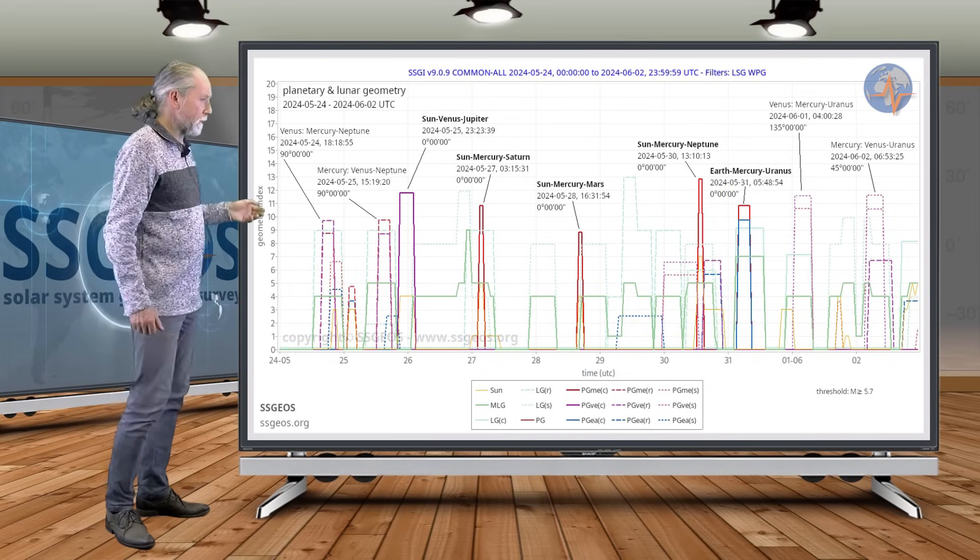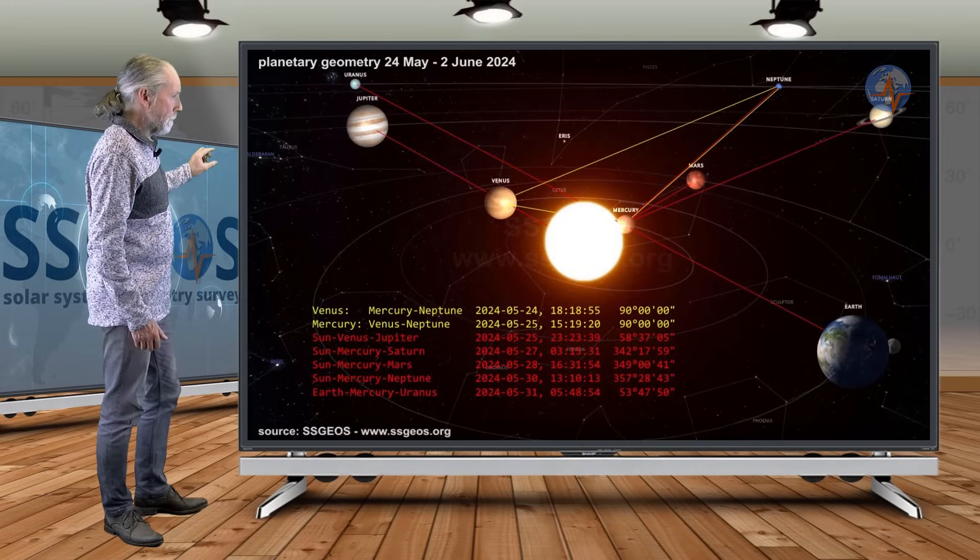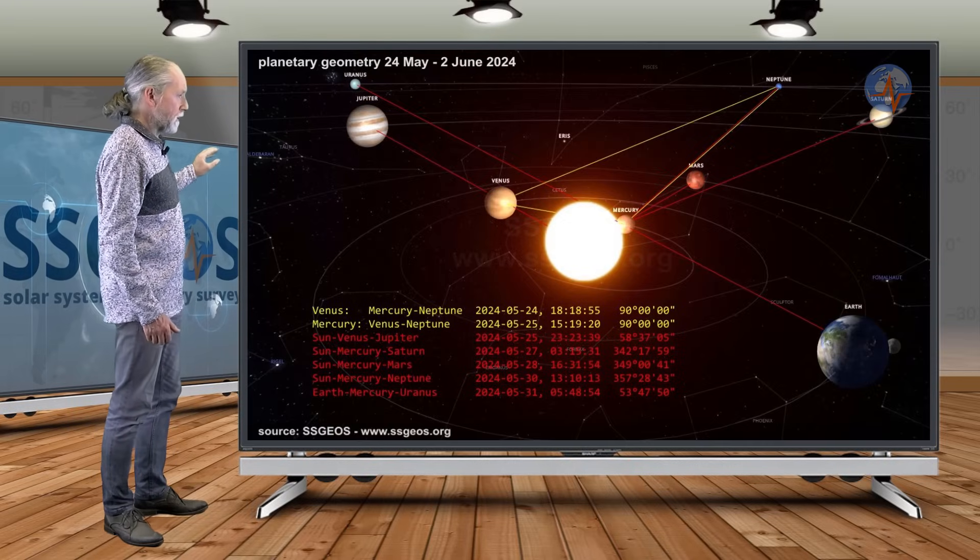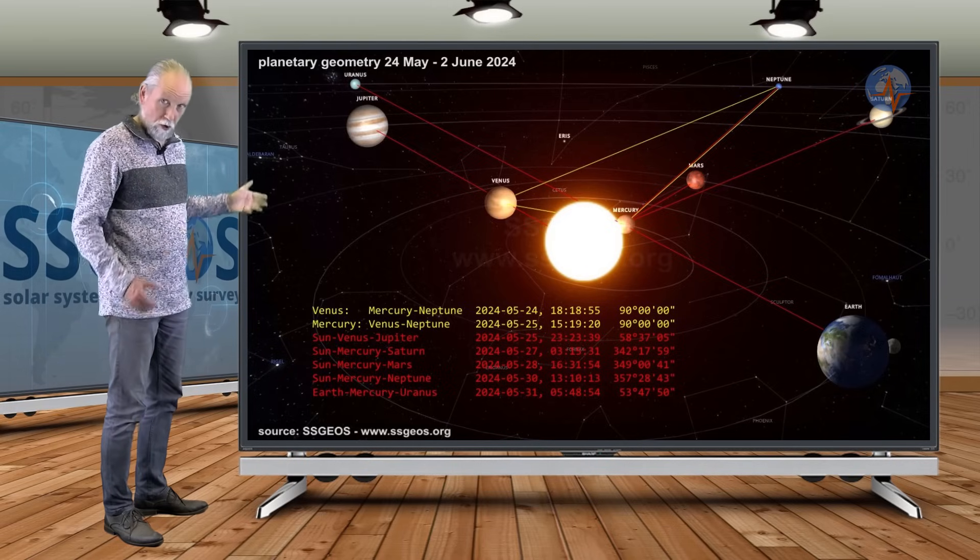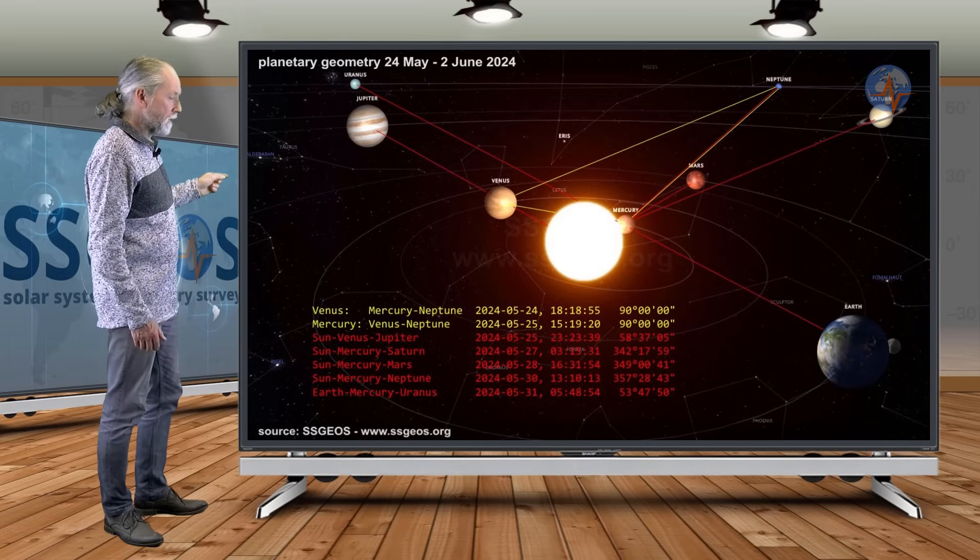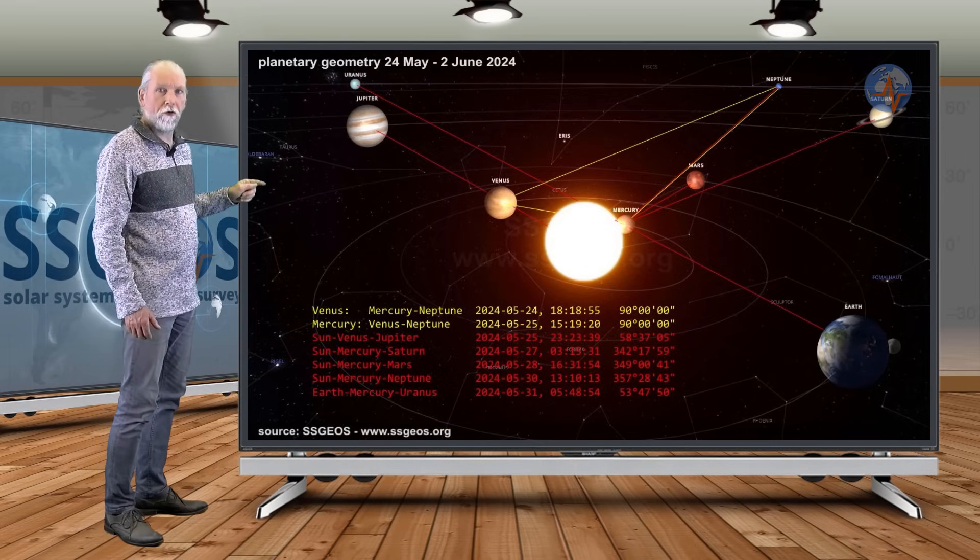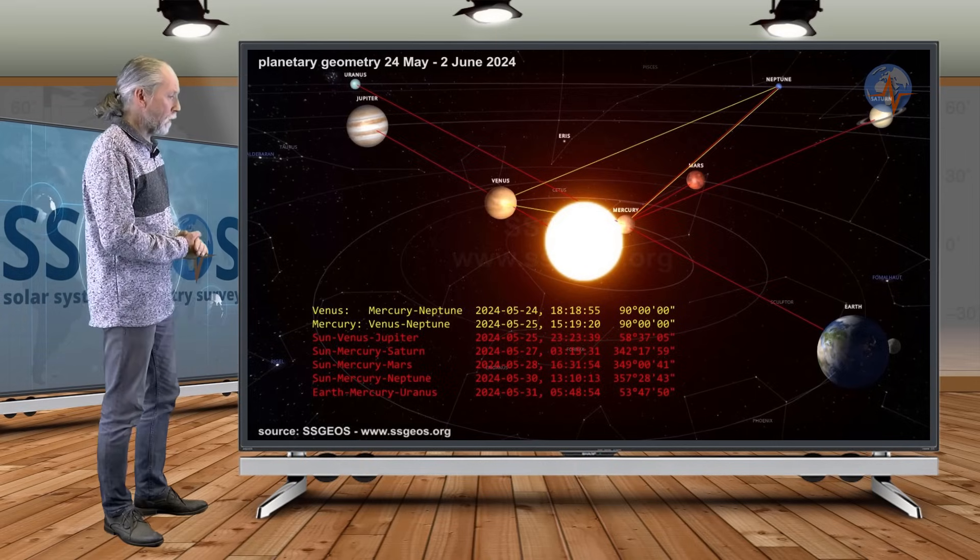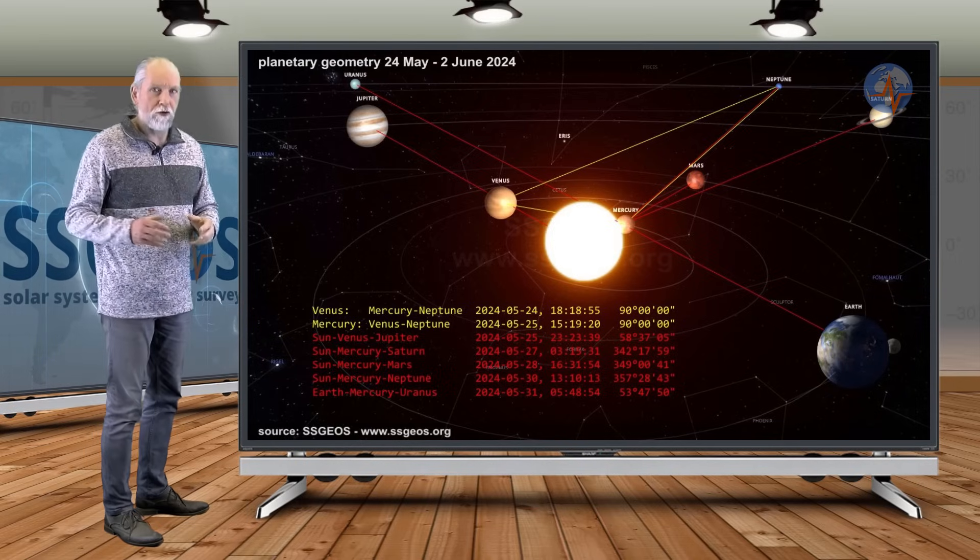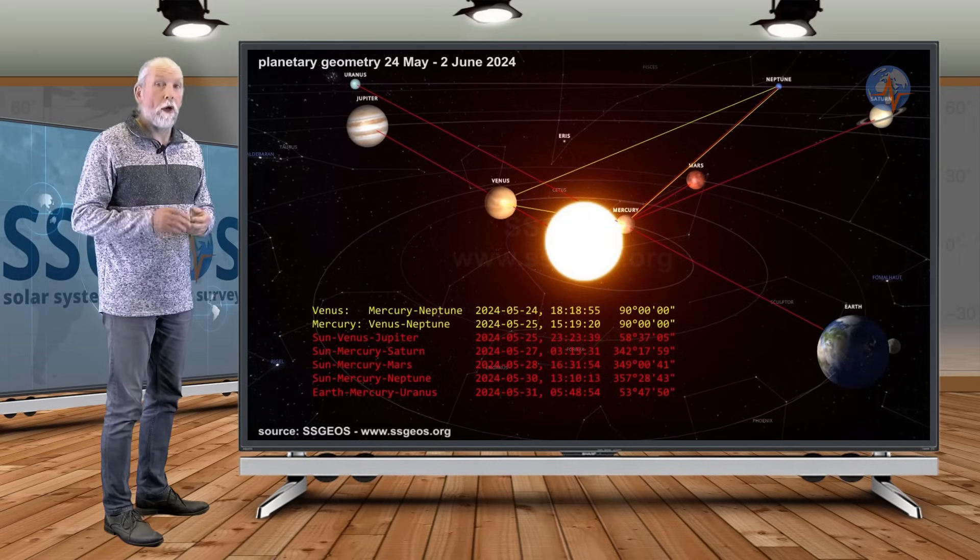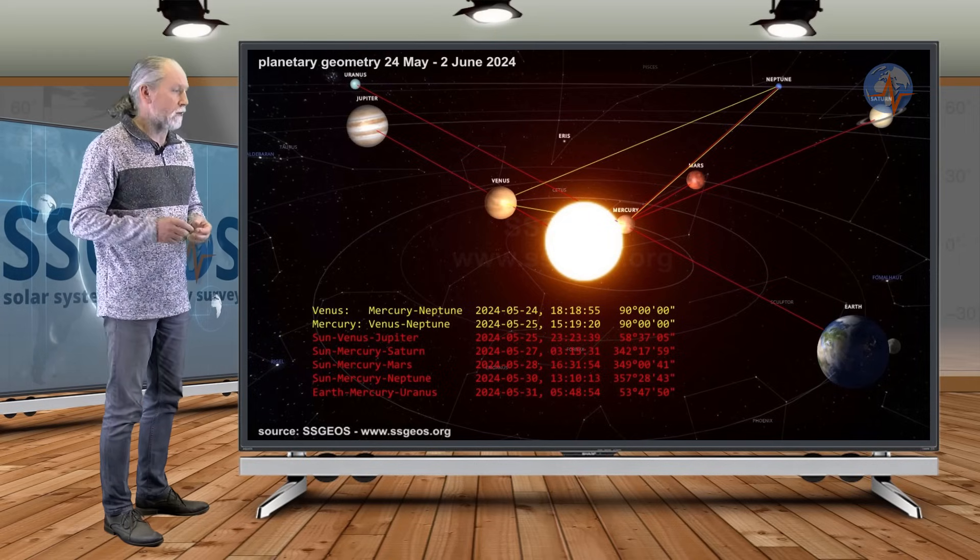A quick look at the solar system, how that is going to look. From 24 May to the 2nd of June, we see the red lines. These are the conjunctions with Mercury. And there's also going to be a conjunction of Earth, Mercury, and Uranus, and that will be on the 31st, last day of May. And that can result in an obvious seismic increase well into the 6th magnitude range, maybe even a magnitude 7 earthquake.